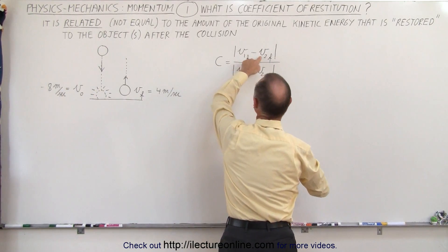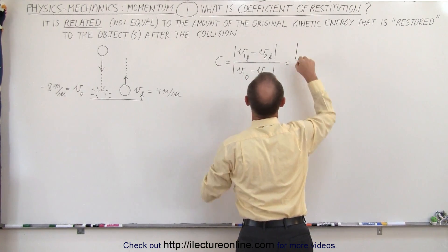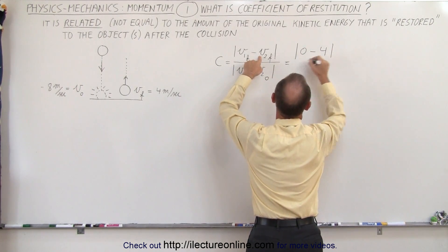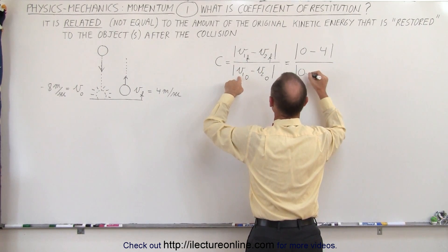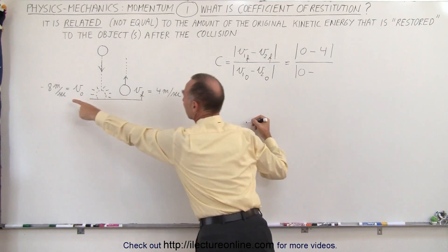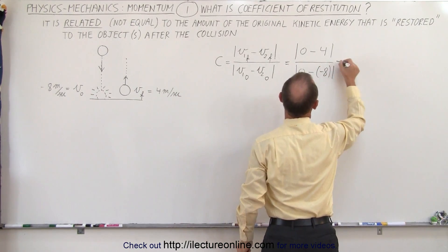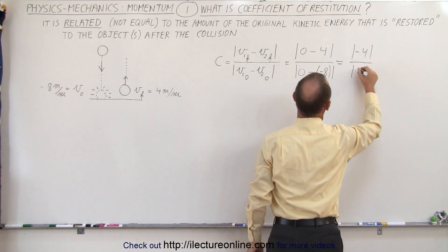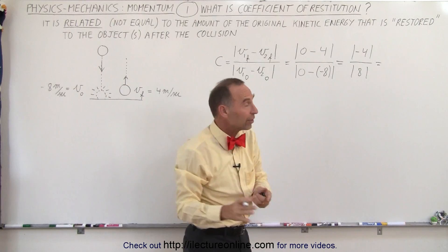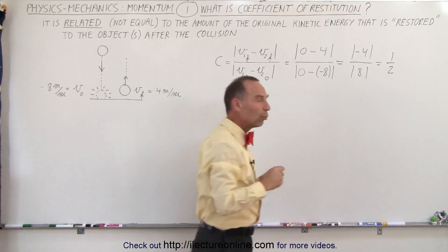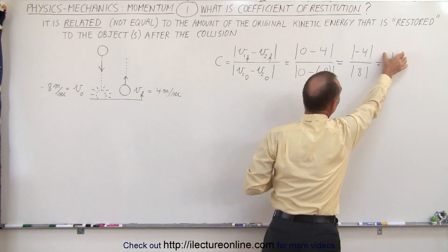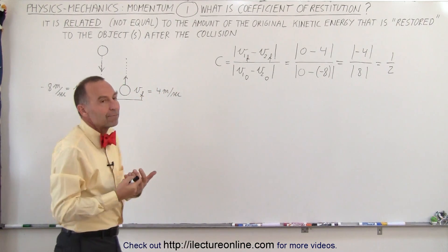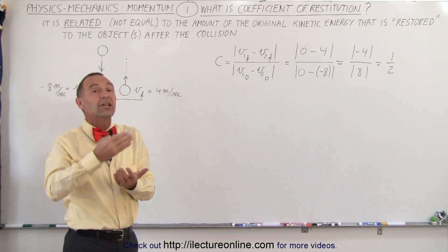Taking object 1 as the floor and object 2 as the ball, the coefficient equals V1 final minus V2 final, divided by V1 initial minus V2 initial. That gives us: numerator = 0 minus 4 = −4; denominator = 0 minus (−8) = +8. Taking absolute values, that gives us −4 divided by 8, which equals one half. So the coefficient of restitution is 0.5 — the ratio of the velocity differences after to before the collision.